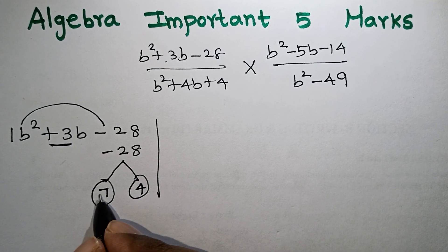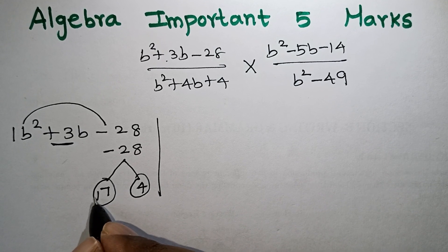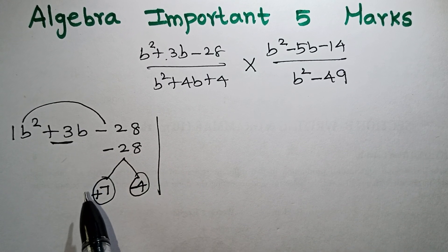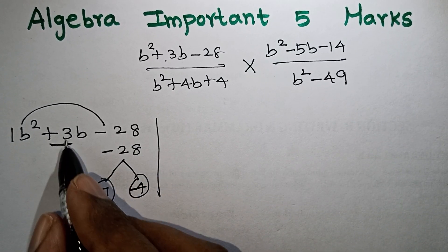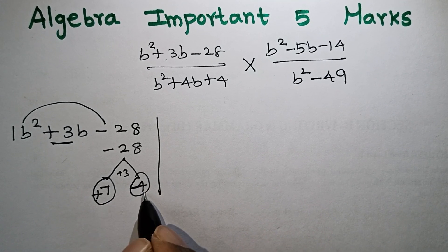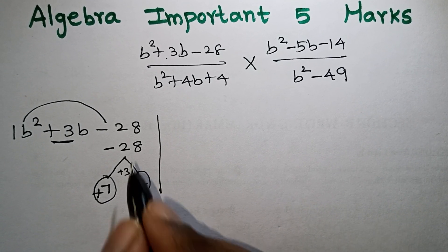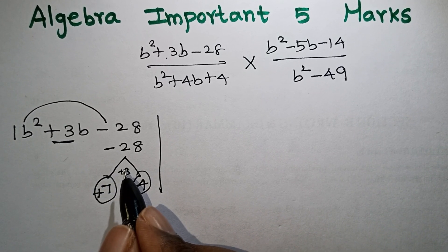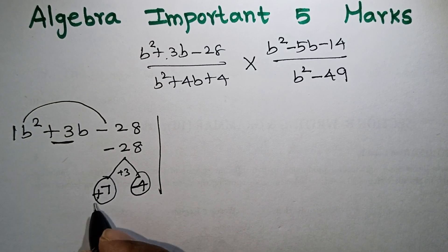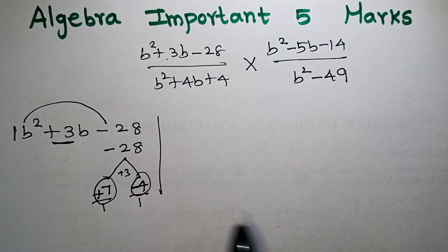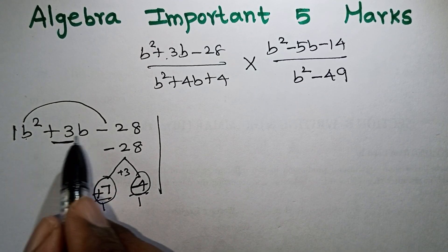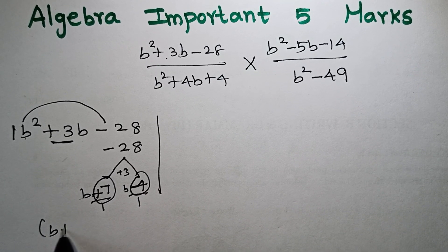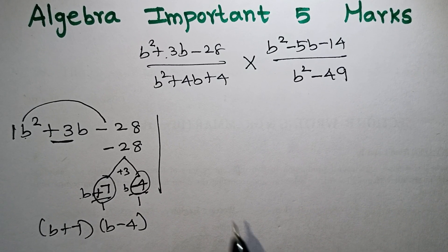If we have two numbers and their sum is plus 3 and product is minus 28, we get plus 7 and minus 4. So we subtract to get plus 3 and multiply to get minus 28. These are the correct factors: b plus 7 and b minus 4.